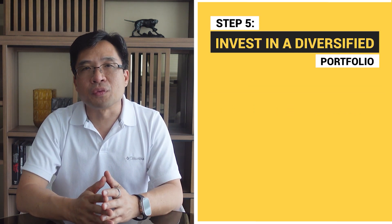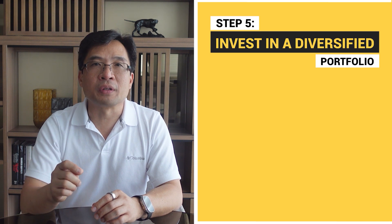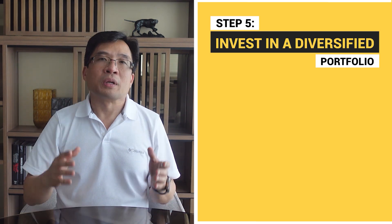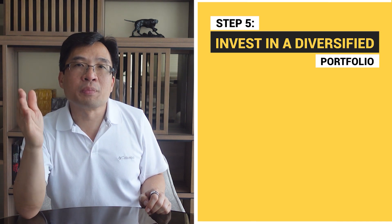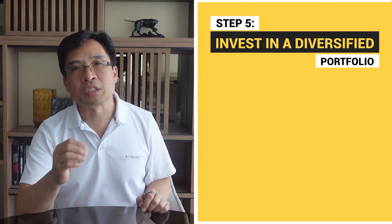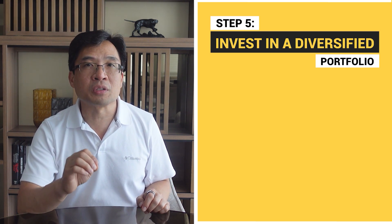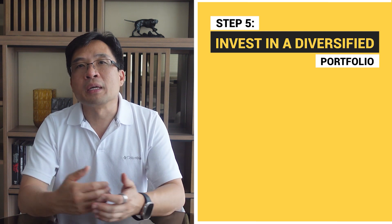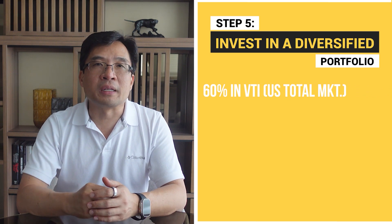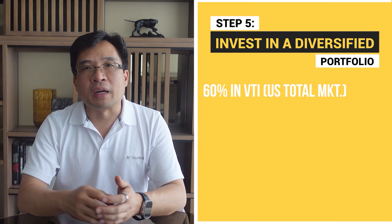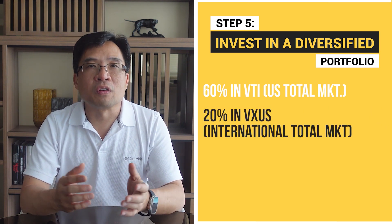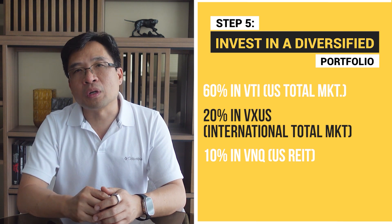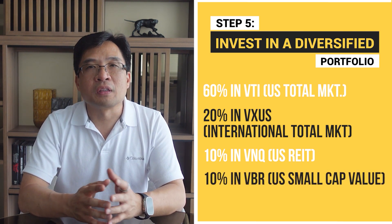Step 5: Invest in a diversified portfolio. At this stage, you've secured an emergency fund, have a tax-advantaged employer matching account, paid off high interest debt, and started investing in tax-advantaged retirement accounts. Now you can invest in a regular taxable portfolio — a diversified mix that may include stocks, bonds, mutual funds, or exchange-traded funds. I would invest my remaining monthly surplus as follows: 60% in a low-cost total US stock index fund like Vanguard's VTI, 20% in a total international stock index fund VXUS, 10% in a real estate investment trust VNQ, and 10% in a US small cap value fund VBR.